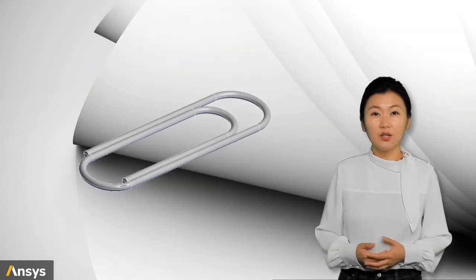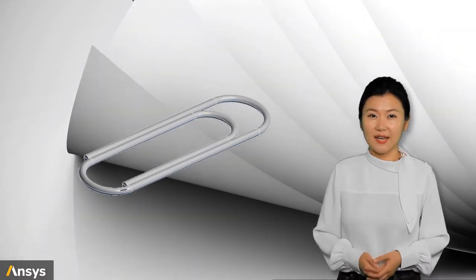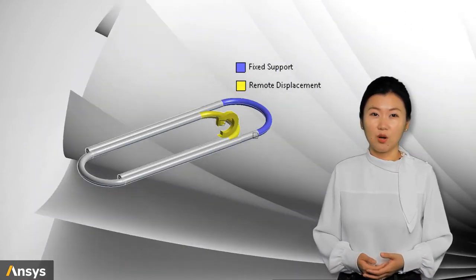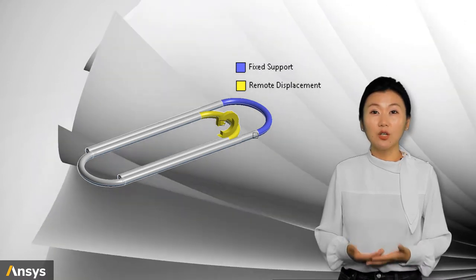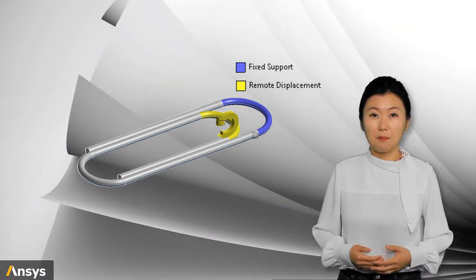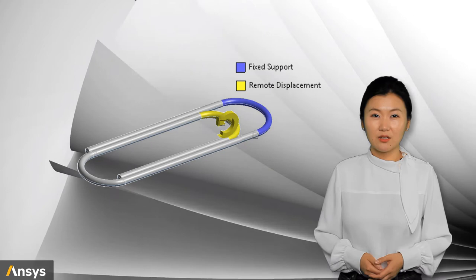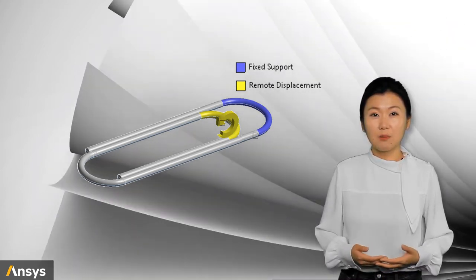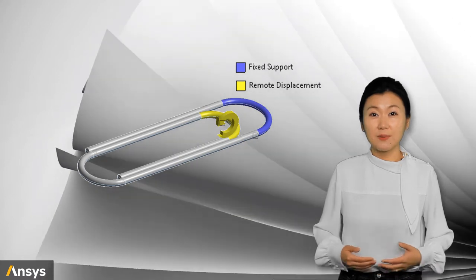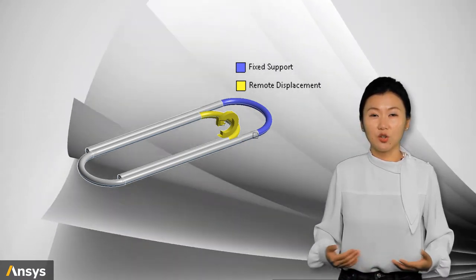Let's create a simulation of a paper clip to learn how the material behaves in this case. For the boundary conditions of the problem, assume that we are holding the paper clip on the outer loop by one hand and bend the inner loop by the other hand. We can use fixed support for the outer circular edge and apply a 90-degree rotation as displacement control to the inner circular edge.